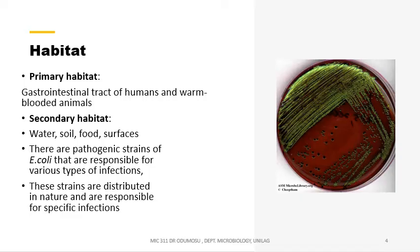There are pathogenic strains of E. coli responsible for various types of infections, and they are distributed in nature. They are responsible for specific infections based on the sources where they are found or based on the medium of their transmission. They have specific infections, specific virulence genes, and specific symptoms.